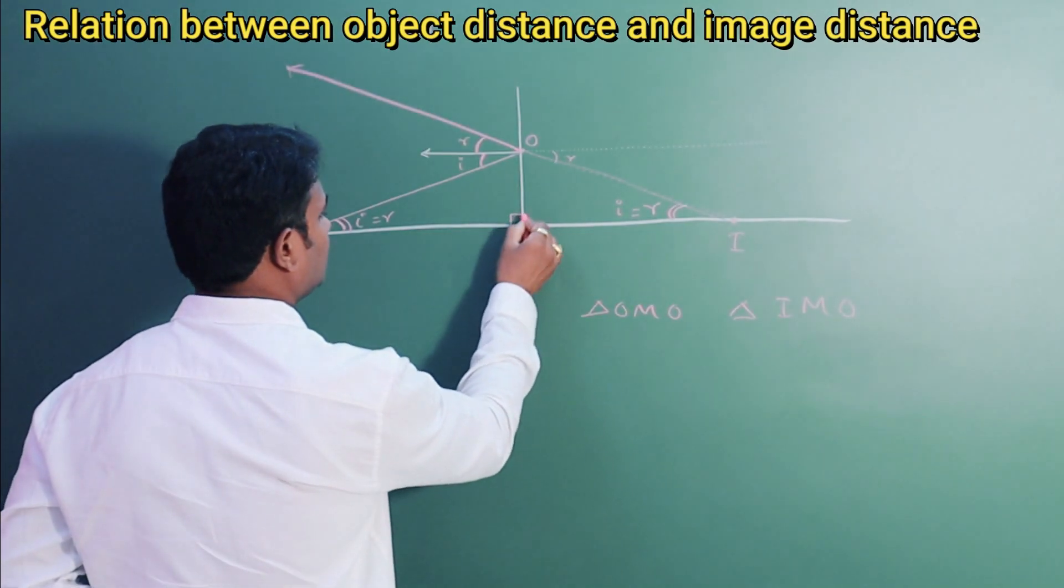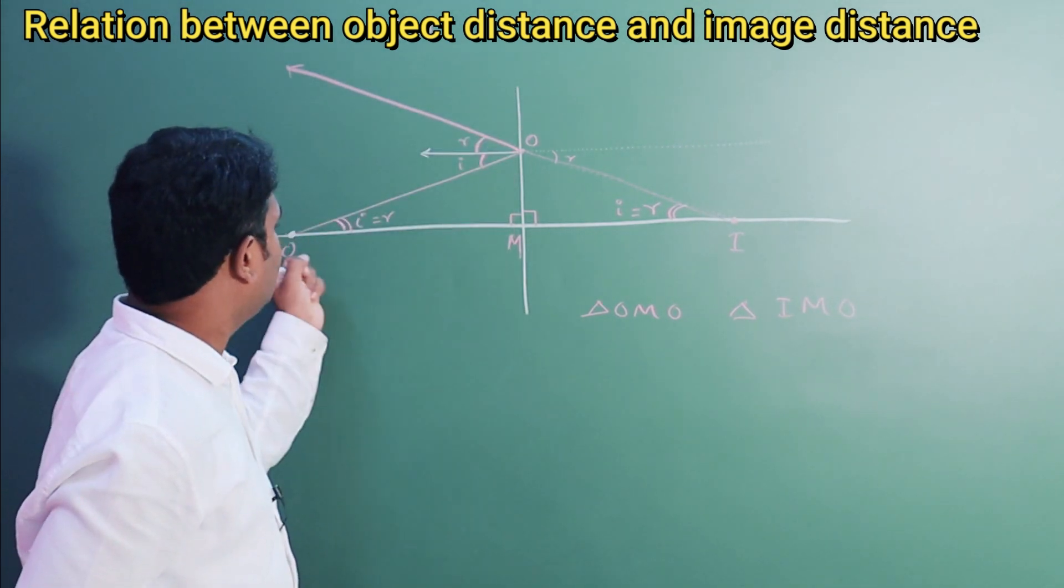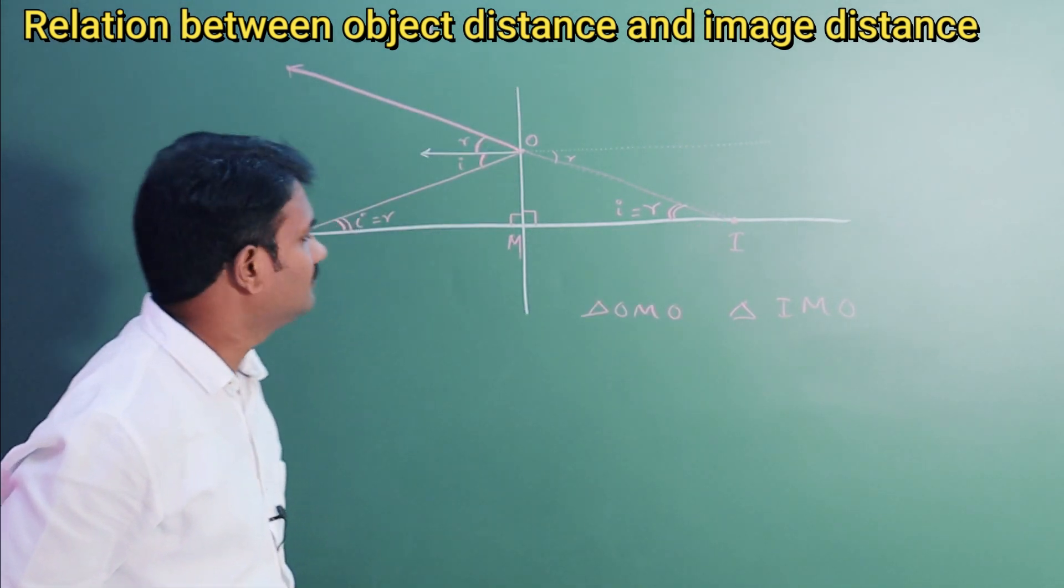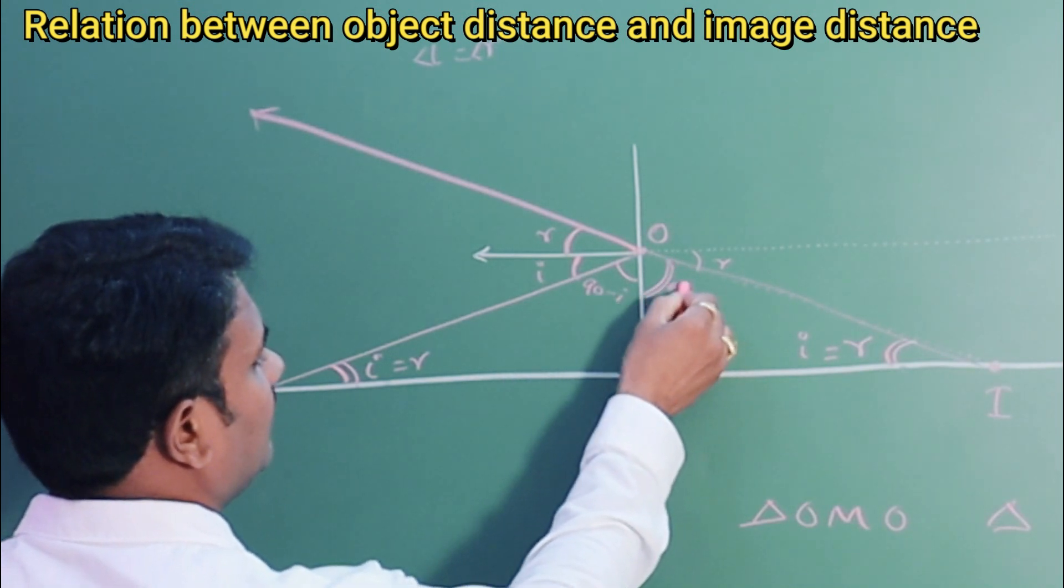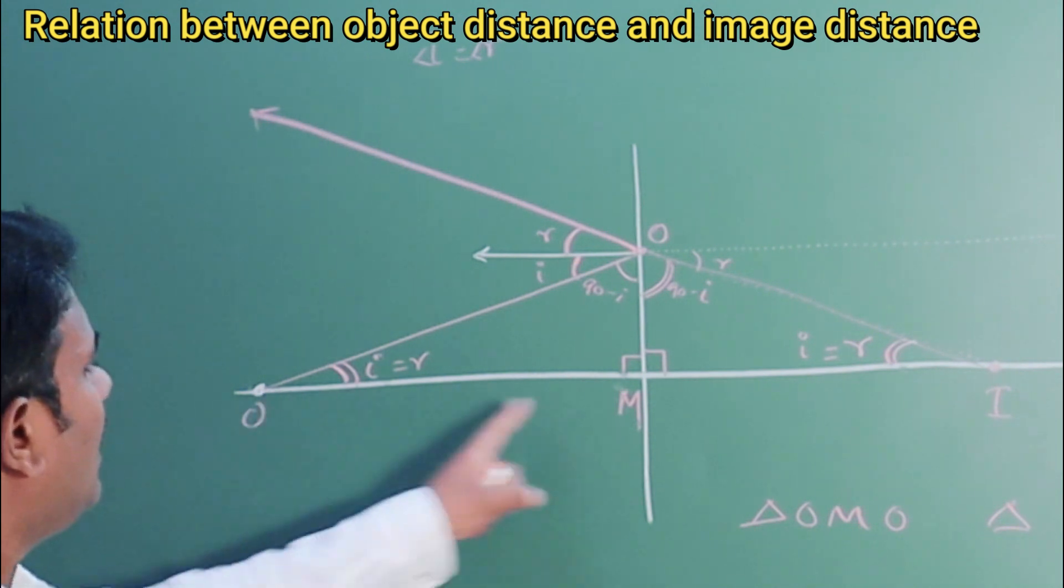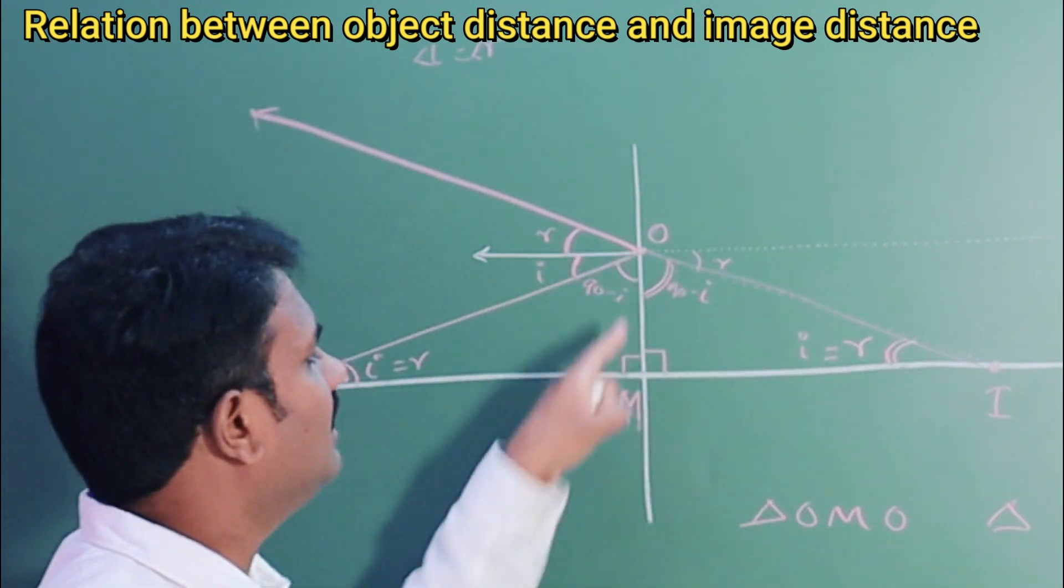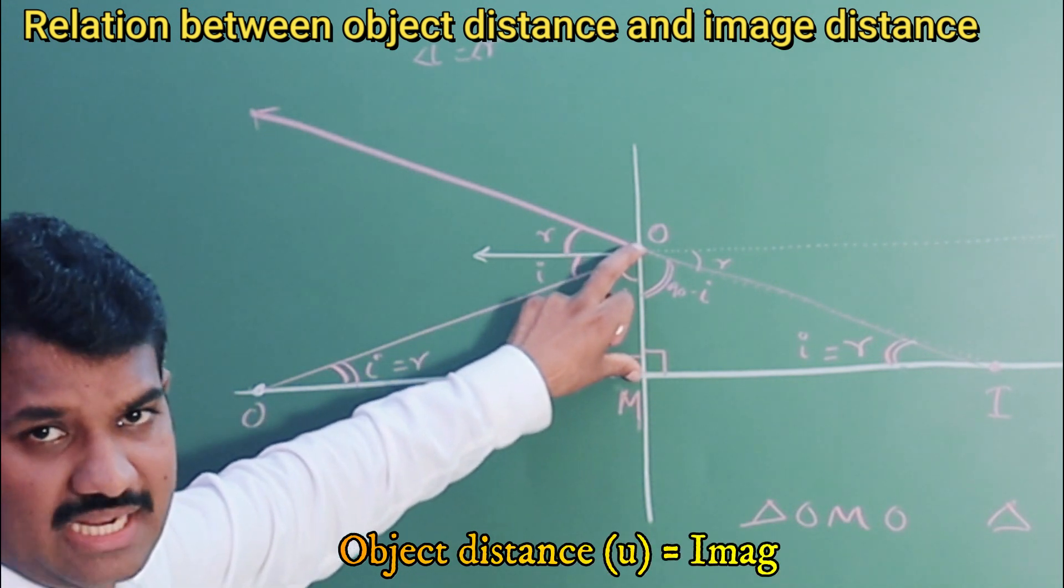Here, this is 90 degrees, here also this is 90 degrees, as this is mirror and this is a perpendicular line. This is 90 minus I and this is also 90 minus R or we can say that 90 minus I. So all angles are equal in these two triangles.